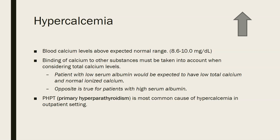The binding of calcium to other substances has to be taken into account when you consider total calcium levels, because half of the blood calcium is actually bound to proteins and the other half is there as ionized calcium. Patients that have low serum albumin would be expected to have low total calcium but probably normal ionized calcium levels, because the low albumin simply means there's less protein to carry the calcium. The opposite is true with patients with high serum albumin — you would expect them to have higher total calcium values.